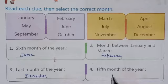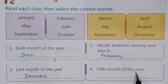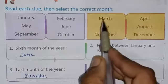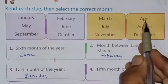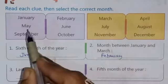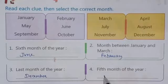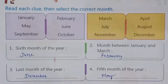Question four: the fifth month of the year. What is the fifth month? Start counting — first, second, third, fourth, and fifth month. So the fifth month is May. M-A-Y. May.